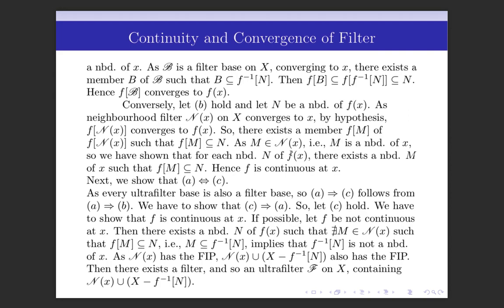Hence M is a neighbourhood of x, and we have shown that for every neighbourhood N of F(x) there exists a neighbourhood M of x such that F(M) is contained in N. Hence F is continuous at x, completing the proof that A is equivalent to B. Next, we show that A is equivalent to C. Since every ultrafilter base is also a filter base, A implies C follows directly from A implies B. It remains to show that C implies A.